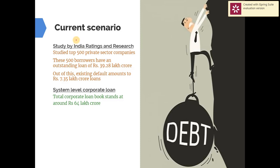Regarding the current situation, India Ratings and Research, a subsidiary of the Fitch Group, has published a report studying the top 500 biggest private sector companies of India. These companies took around 440 lakh crore in loans and have defaulted on around 7.3 lakh crore of those loans. The reason for default is not always due to lender or borrower mistakes, malfeasance, corruption, or fraud — it can also be due to the slow growth of the country's GDP. The report also mentioned that overall outstanding corporate loans in India currently account for 64 lakh crore.